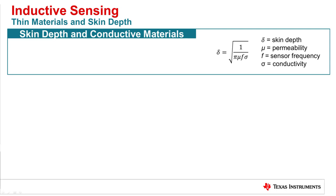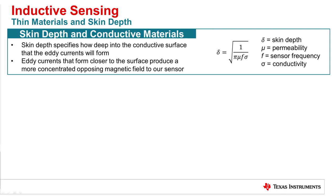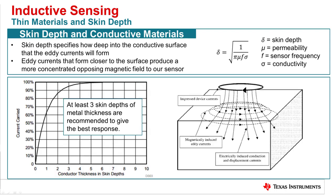Skin depth is all about the effectiveness of a metal target. Skin depth specifies how deep into the conductive surface the eddy currents will form. Eddy currents that form closest to the surface produce a more concentrated opposing magnetic field to our sensor, and therefore provide a stronger frequency shift detected by the LDC. We recommend at least three skin depths of metal thickness for the best response, since anything below that would provide a weak response.